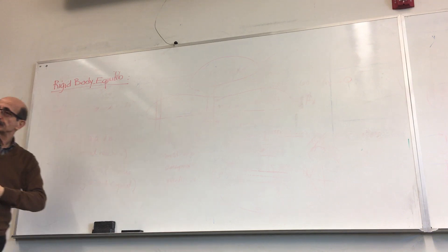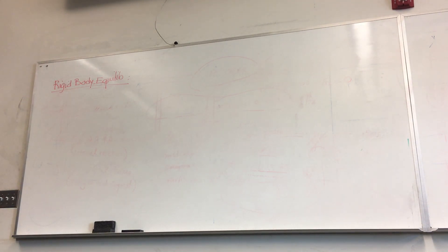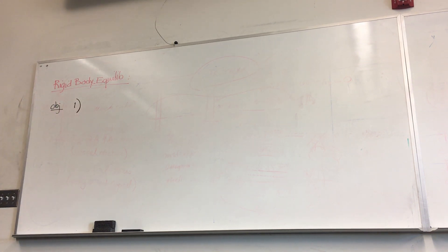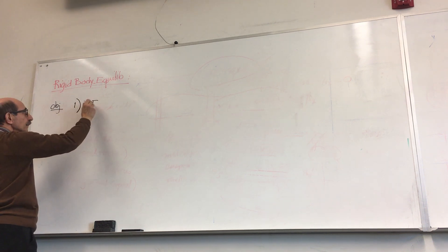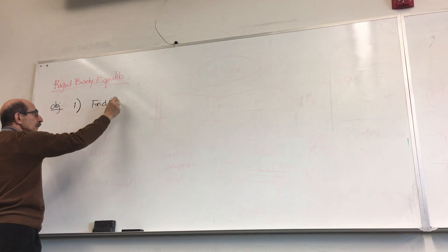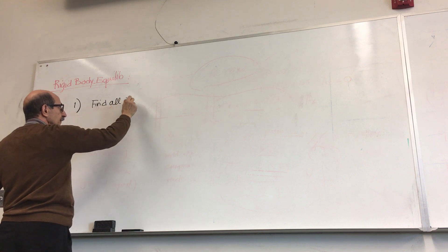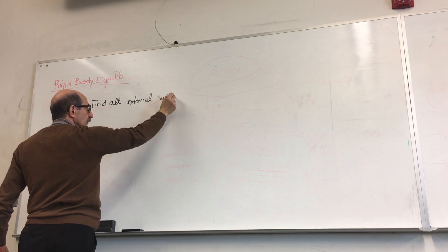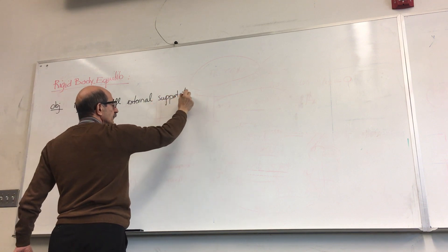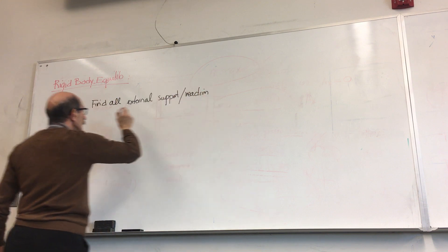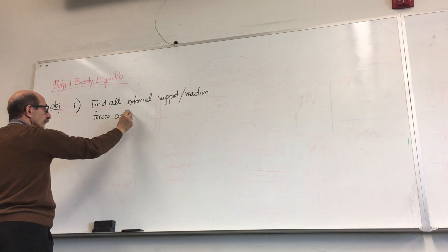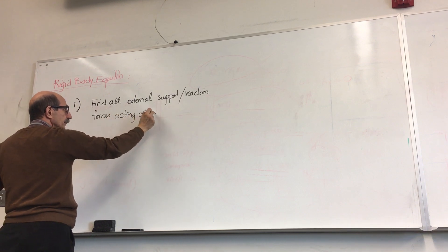The objective of rigid body equilibrium, which is the rest of the course, is twofold. Objective number one is to find all external support or reaction forces acting on a body.